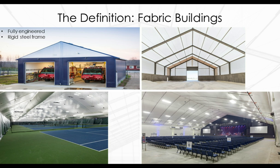There are a wide variety of fabric structures available, including temporary tents, small single-tube arch buildings suitable for carports, and permanent structures fully engineered with a foundation and a truss or rigid steel frame. Today we will be talking about fabric structures that are fully engineered and use a rigid steel frame for support, both because this is most comparable to an engineered metal building and because that is the type of building Legacy is most familiar with.